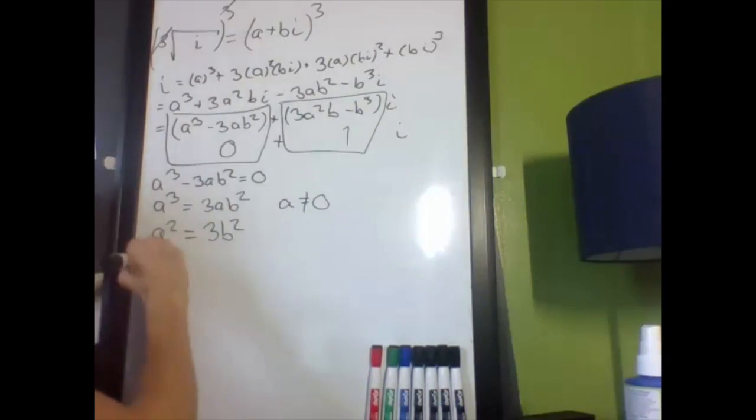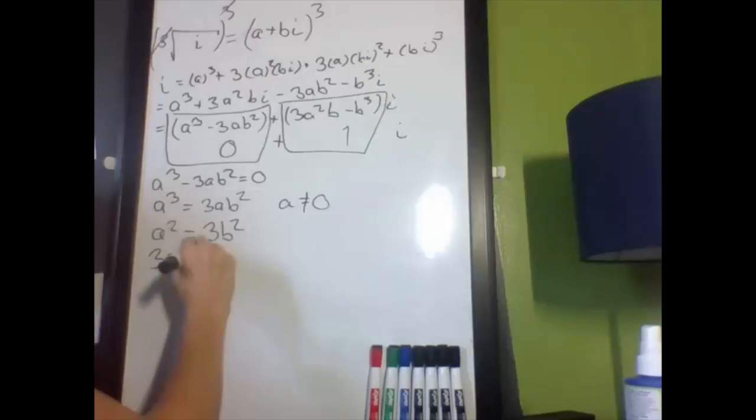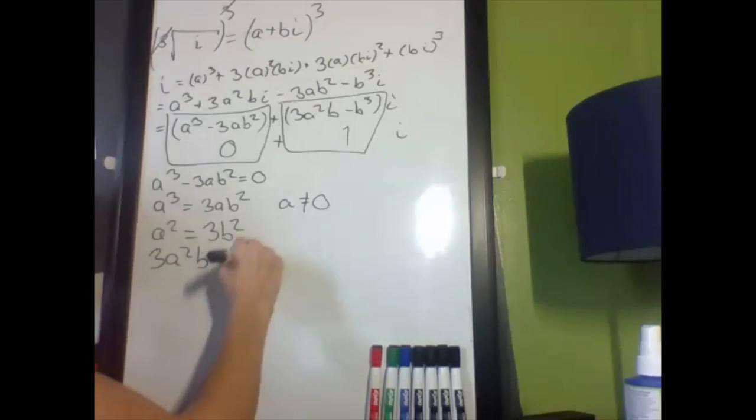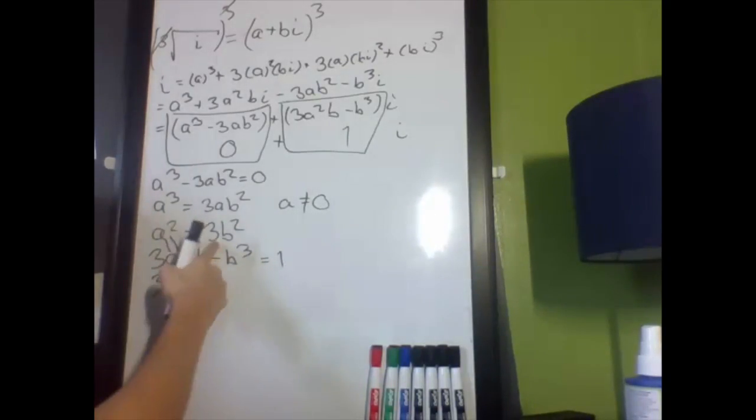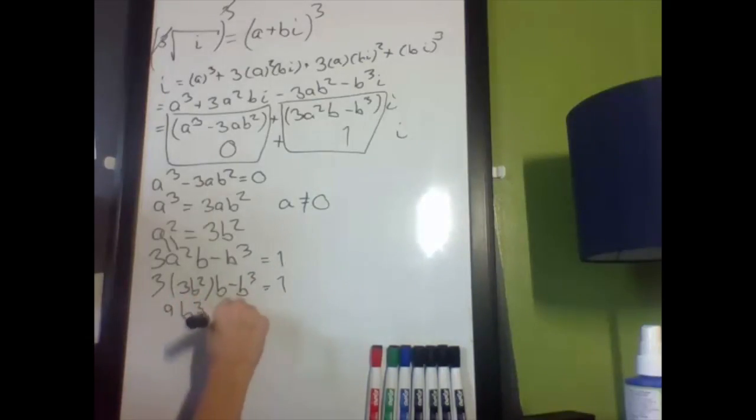And now I'll focus on this equation, which is 3a squared b minus b cubed equals 1. Now what I'm going to do is I'm just going to plug in for a squared right there. So I get 3 times 3b squared times b minus b cubed equals 1. And then I get 9b cubed minus b cubed equals 1. And putting that through, I get 8b cubed equals 1.